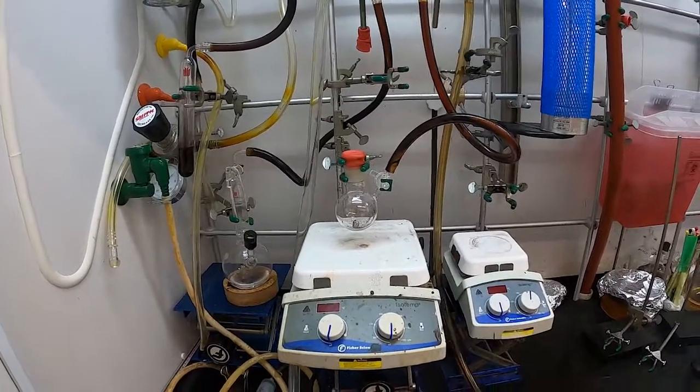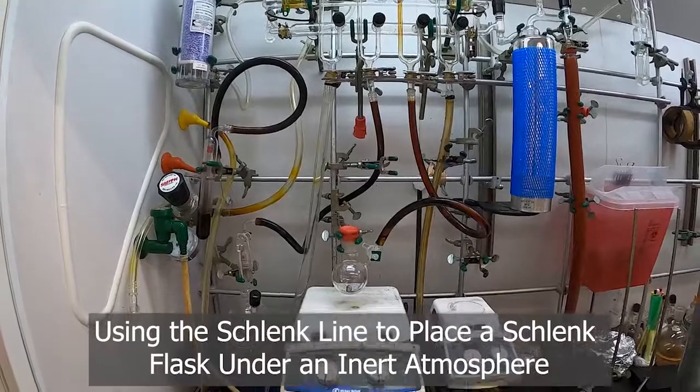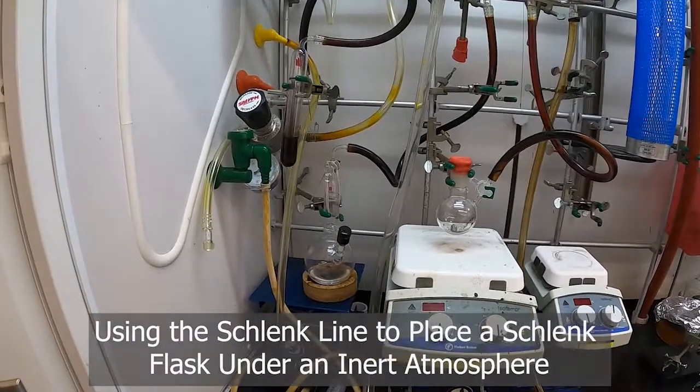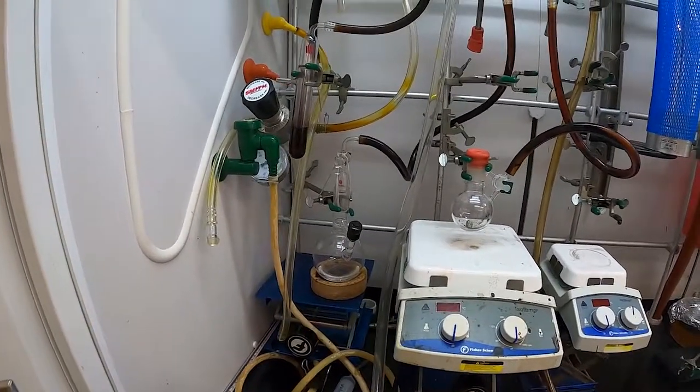So now that our Schlenk line is prepared, and say we have this flask here that we want to cycle so that we can put solvent in it from this storage flask of dry solvent.